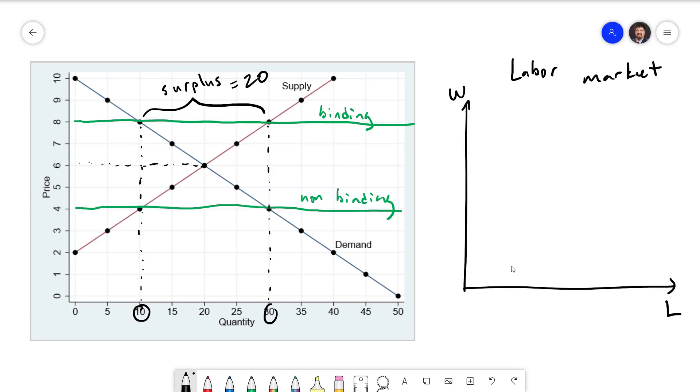Just like any market, the labor market has a demand curve except this time the demand curve comes from firms who are trying to hire people. And it also has a supply curve which this time comes from households, people like you and me who want to work. Just like any market, the labor market has an equilibrium wage and quantity of labor.